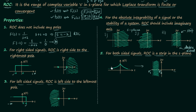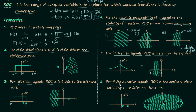The sixth and final property states: for finite duration signals, the ROC is the entire s-plane, excluding s equals 0 and/or plus infinity and/or minus infinity. For a finite duration signal, the region of convergence is the entire s-plane, possibly excluding 0, plus infinity, minus infinity, or any combination of these.